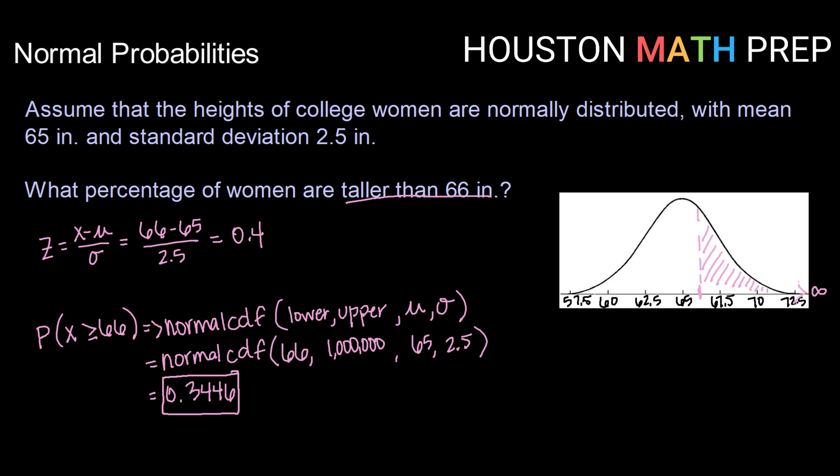Typing that in and hitting enter, you will get a value 0.3446. Because the normal table rounds to 4 decimal places, I'm going to round to 4 decimal places also. So what percentage of women are taller than 66 inches? Well, about 34.5%.